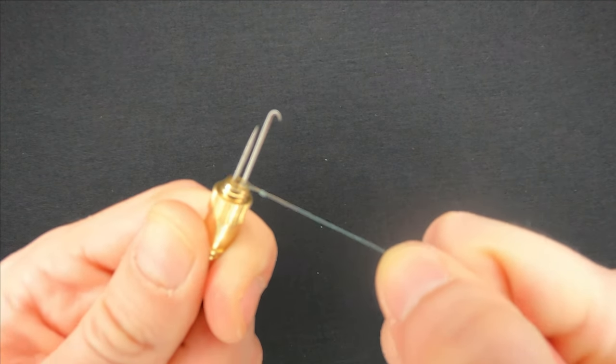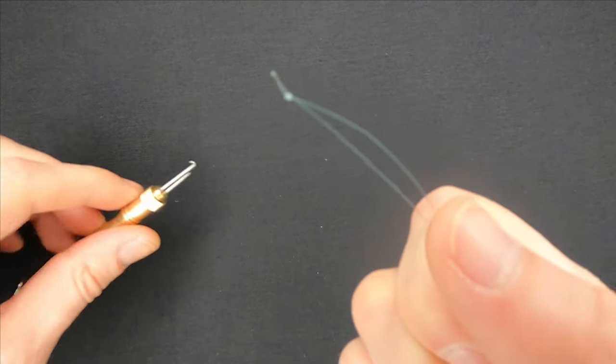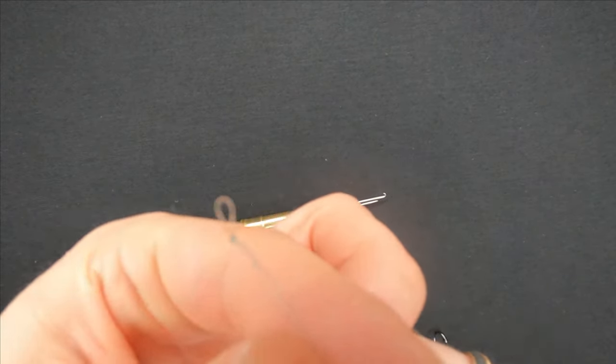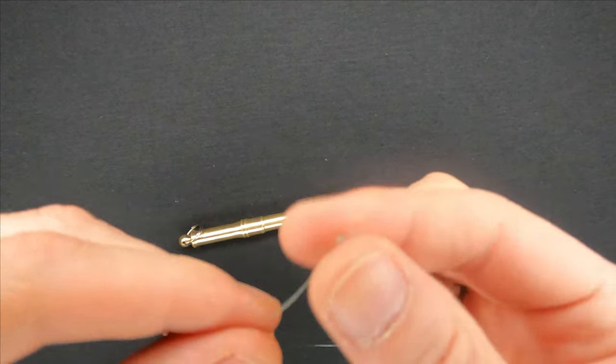Pull the line one more time and now you've got a small loop on the line and a hook on the other end.